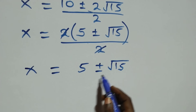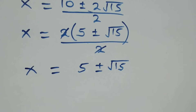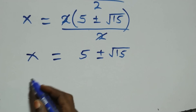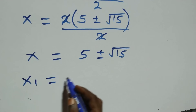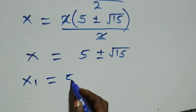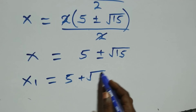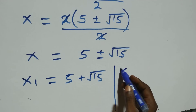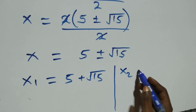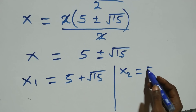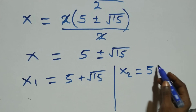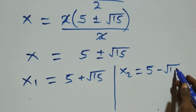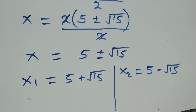So we have two values of x. The first solution is x one equals five plus root fifteen, and the second is x two equals five minus root fifteen.